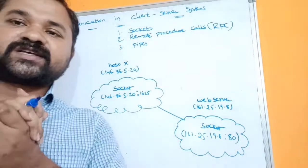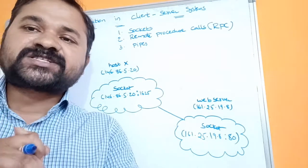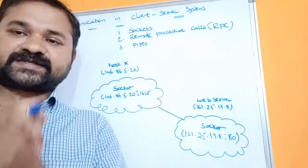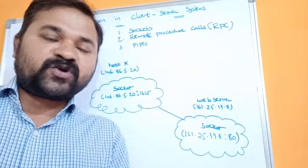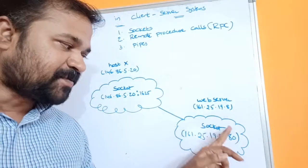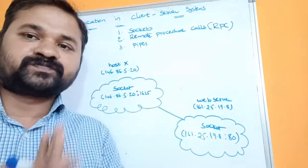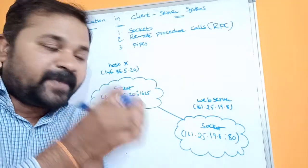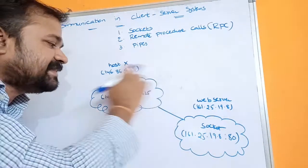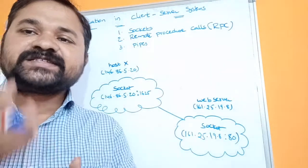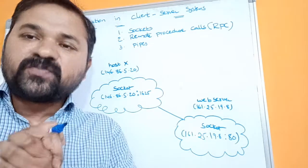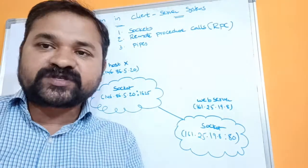First let's see about sockets. Sockets are mainly useful for communication between two processes. Let the first process be in the client system, whereas the second process is in the server system. So we can make communication between those two processes by creating sockets — that is the advantage of sockets.